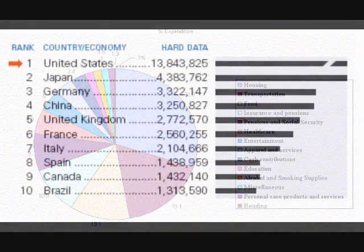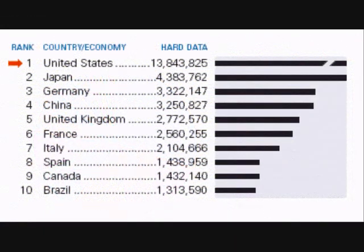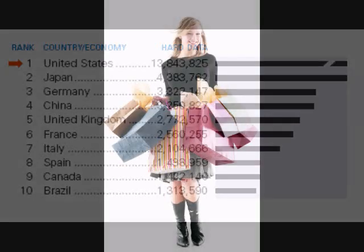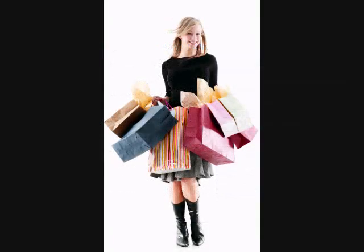The rest is entertainment, apparel, education, alcohol, personal care, and other miscellaneous items. Here in the United States, we have the largest GDP in the world by far — about three times as big as Japan and four to five times as big as Germany, the third largest. When there is an increase in the GDP, it means people are spending more, causing companies to produce more, increasing the workforce and decreasing unemployment.